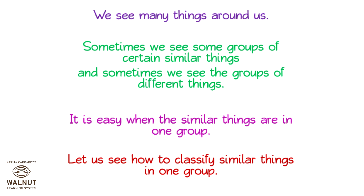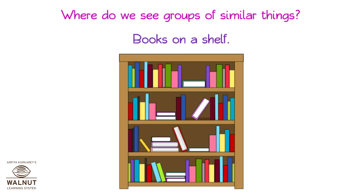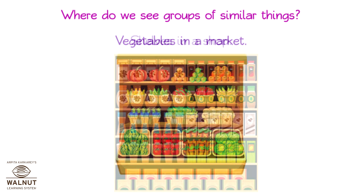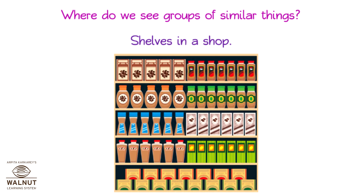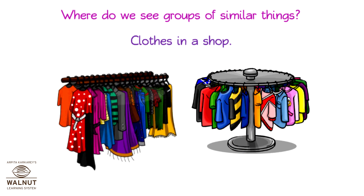Where do we see groups of similar things? Books on a shelf. Vegetables in a market. Shelves in a shop. Clothes in a shop.